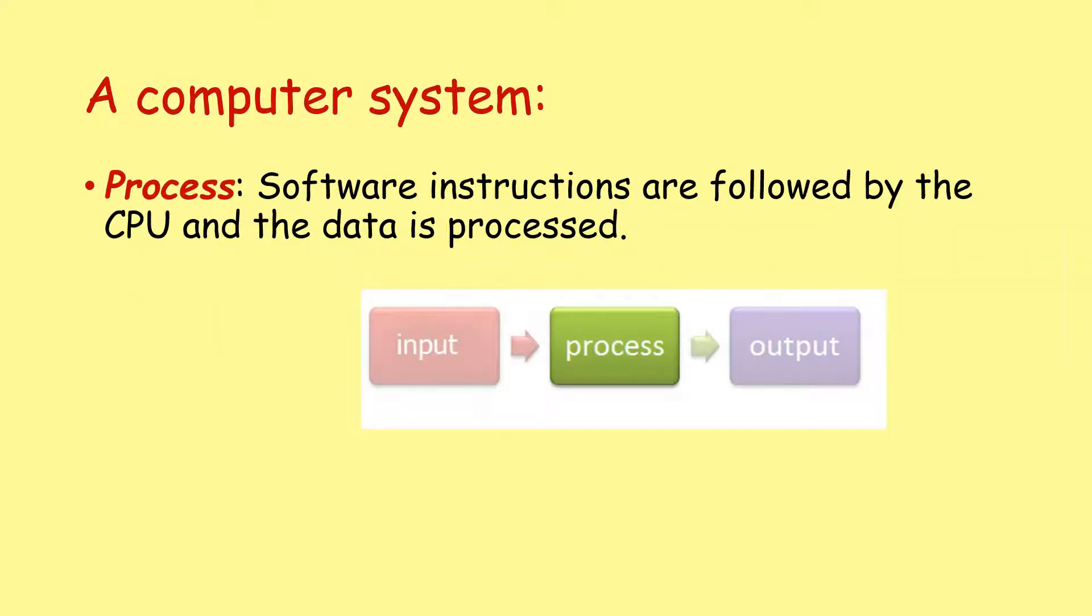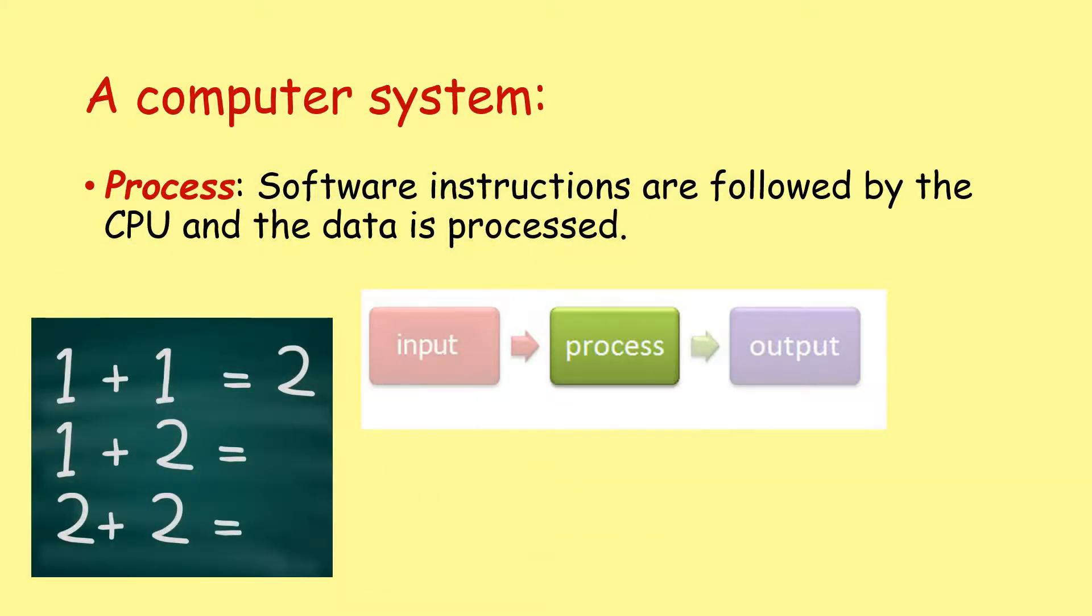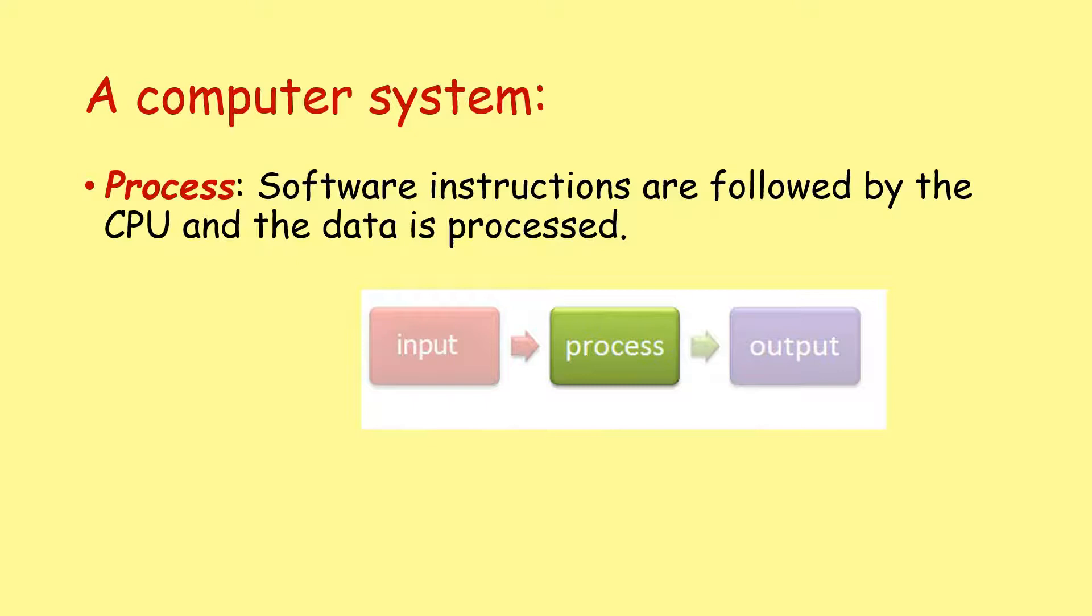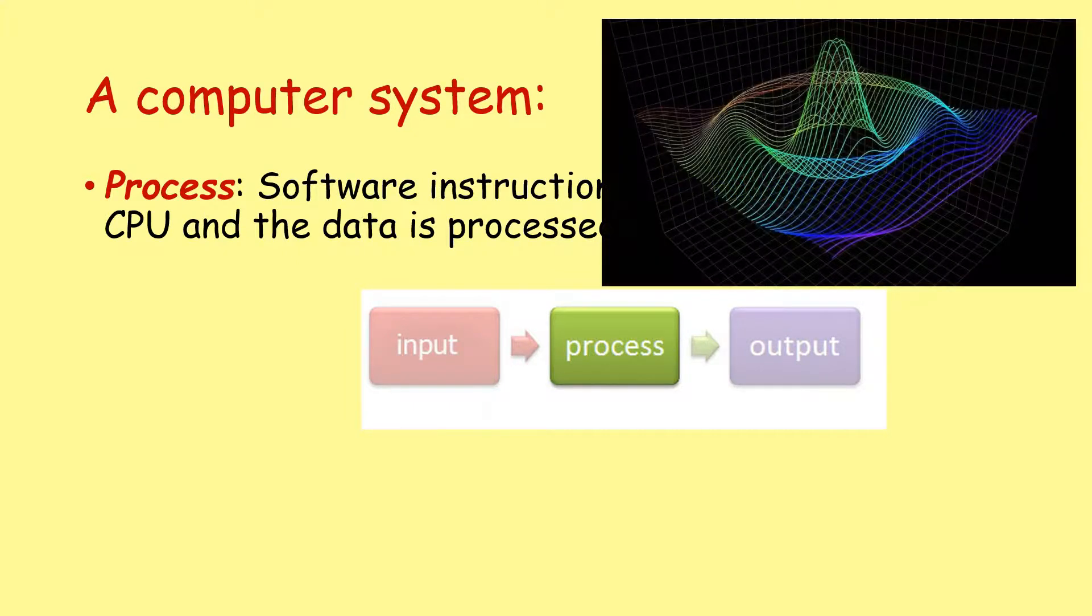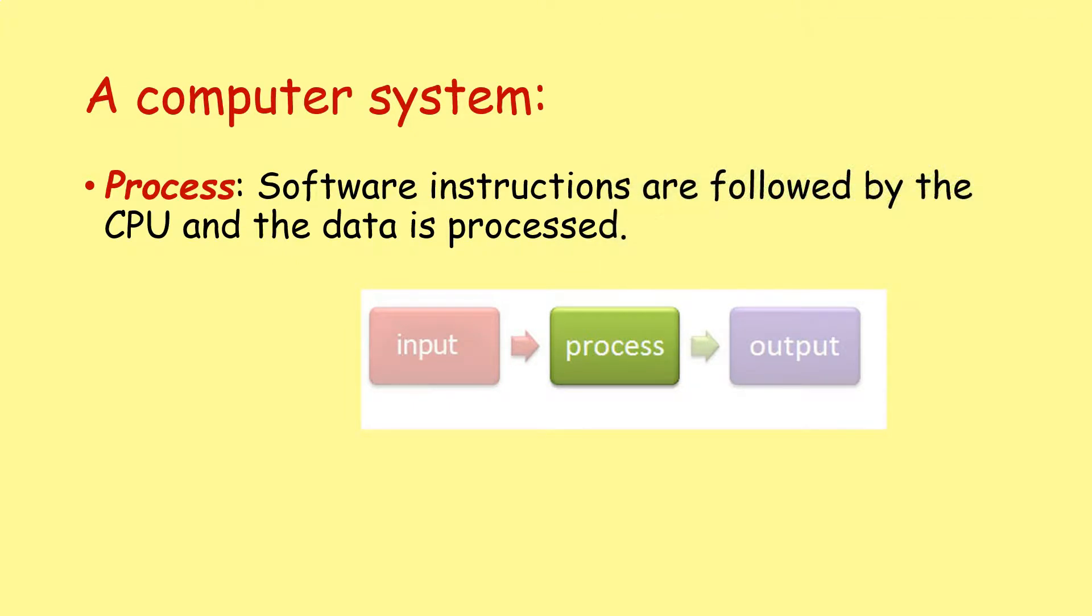Process just means that there are a series of software instructions that can be followed by the CPU to process that data. Whether that's something very simple like adding two numbers together or something more complicated to do with calculating 3D graphics or something like that, it's the same basic idea.